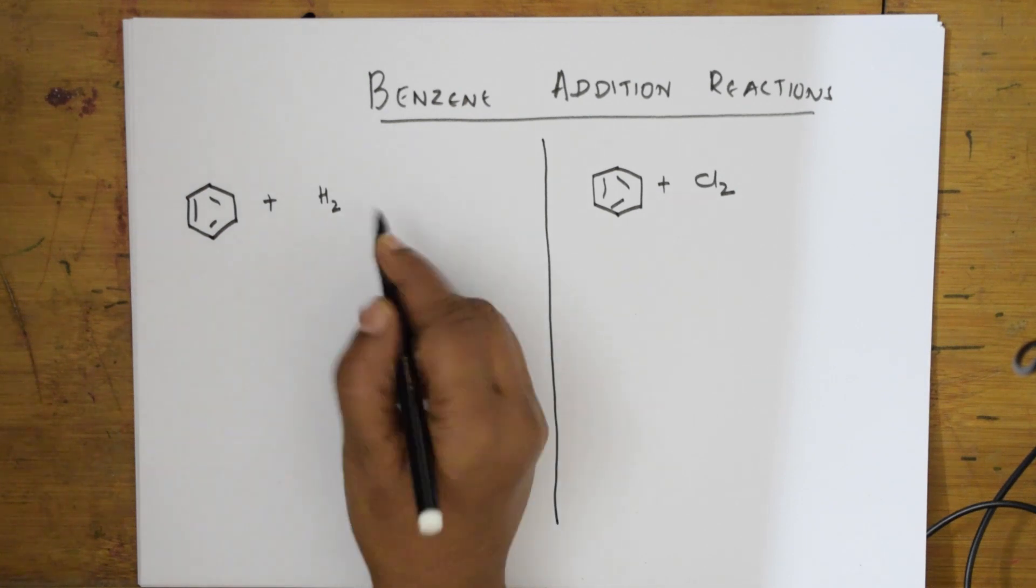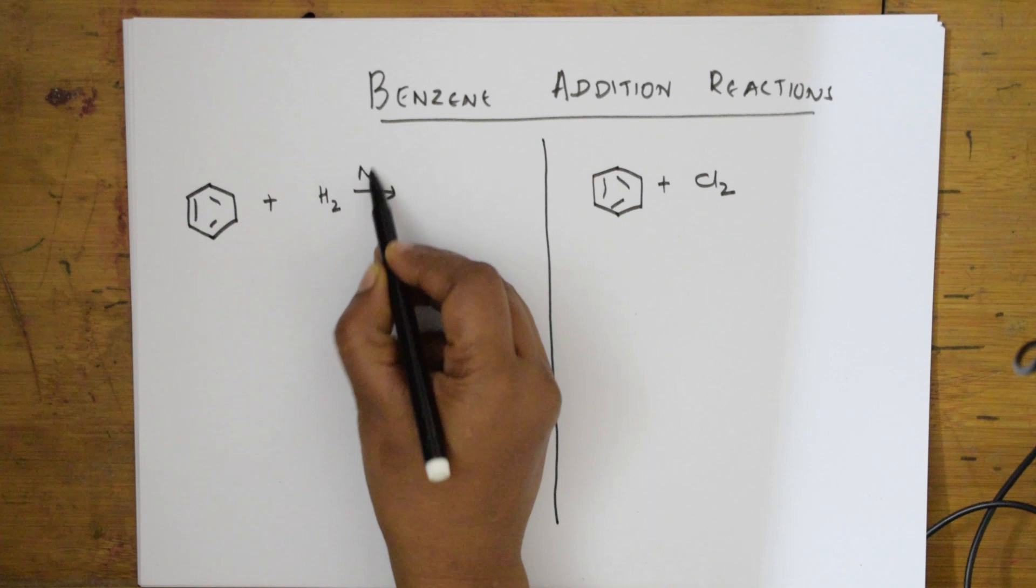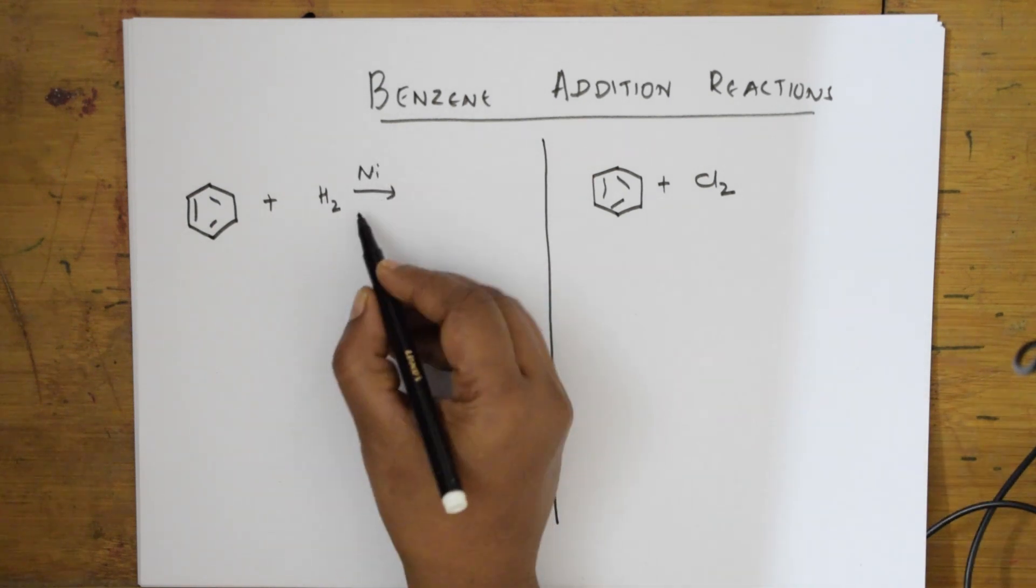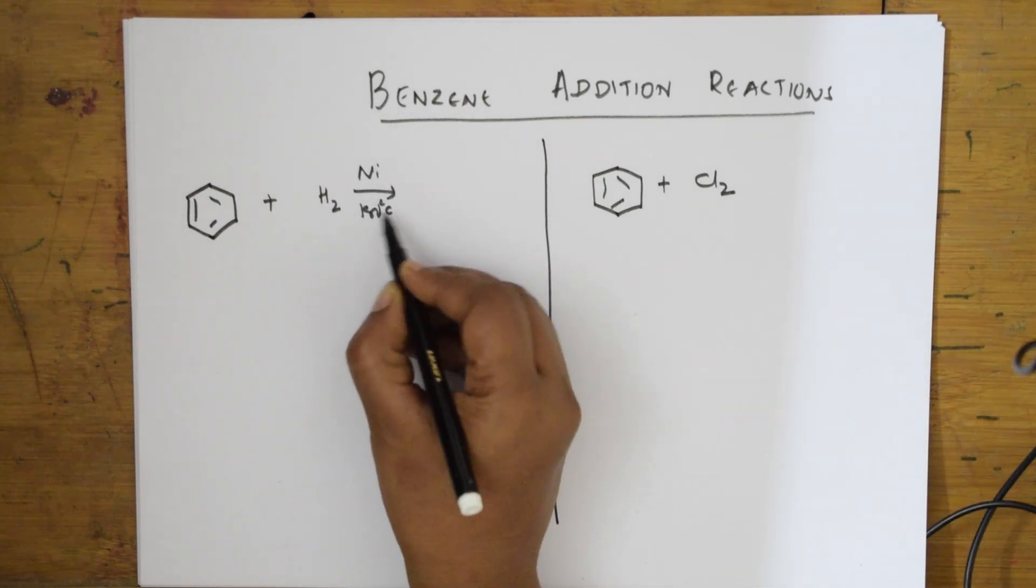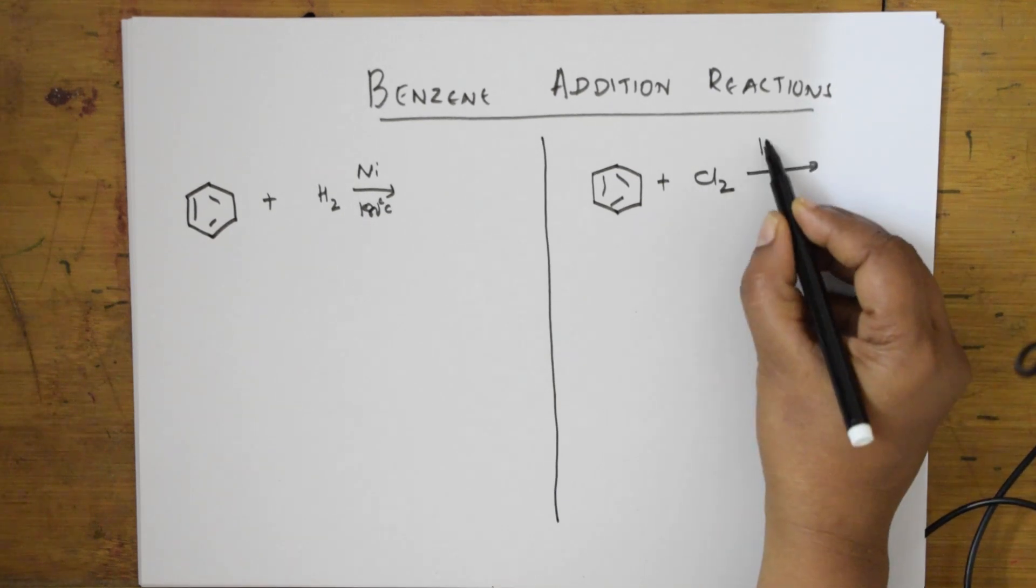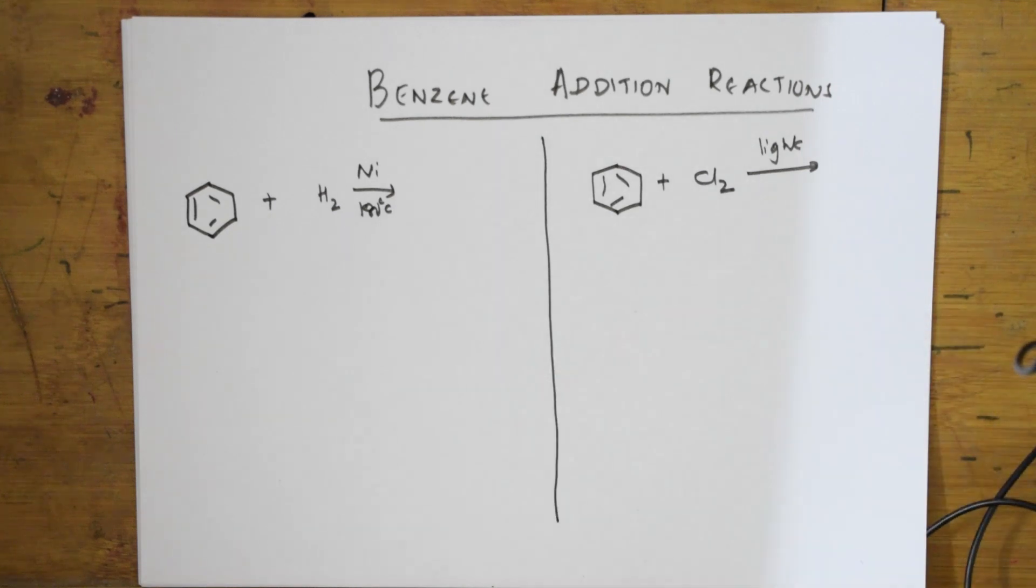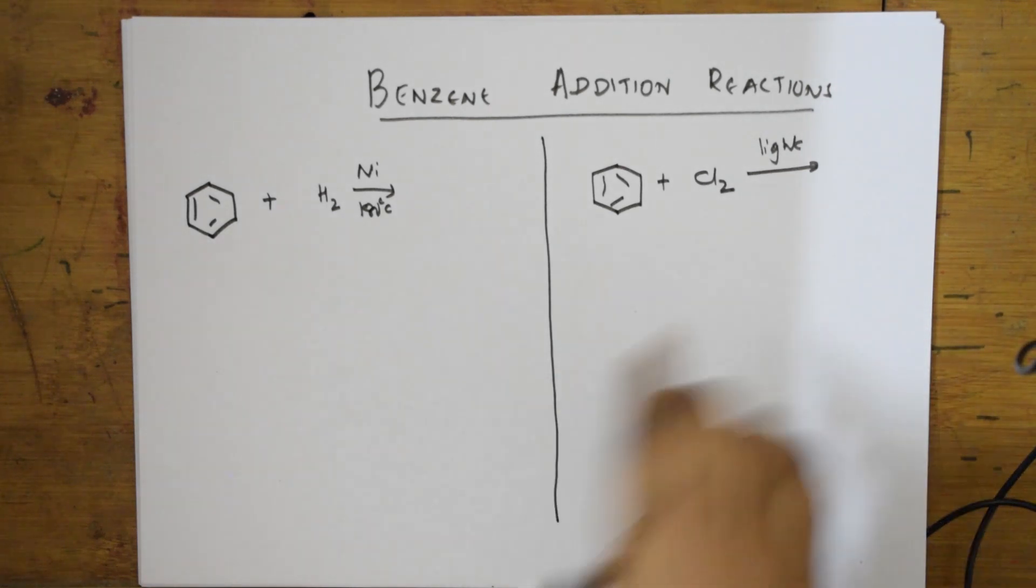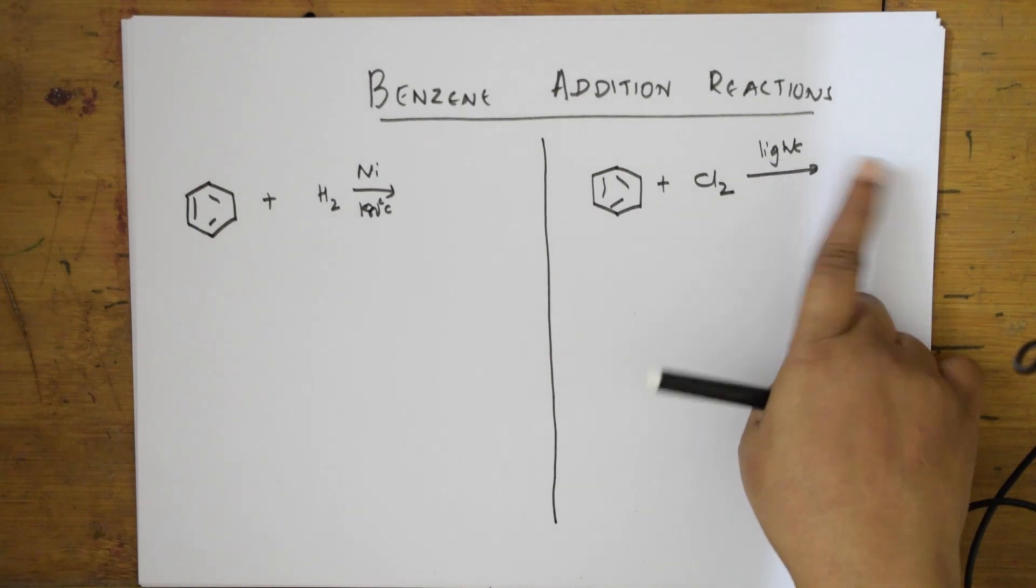Whenever you are adding hydrogen remember you require a reducing agent like a metal, nickel. I am going to heat it to 180 degrees. The chlorination has to occur in the presence of sunlight. In the exam, if no light is given, please write no reaction. Light is important here.